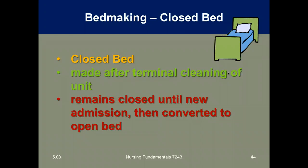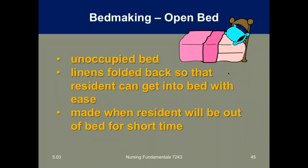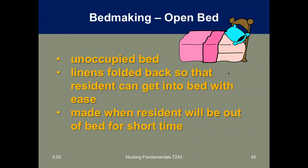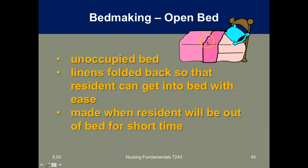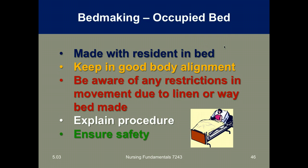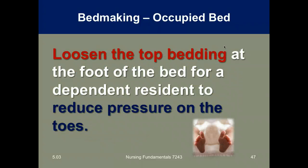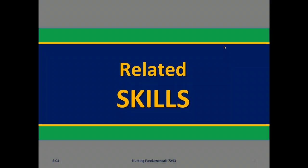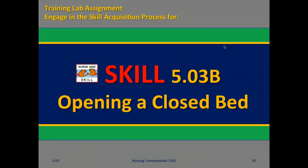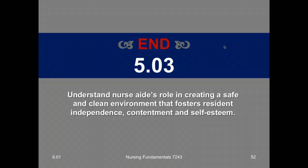A closed bed is made after terminal cleaning of the unit and remains closed until a new admission, when it's converted to an open bed. An open bed is an unoccupied bed where the linens are folded back so the resident can get in with ease — it's made when the resident will be out of bed for a short time. An occupied bed is made with the resident in the bed. You must maintain good body alignment, be aware of any restrictions or equipment, and explain the procedure to the resident to ensure their safety. Loosen the top bedding at the foot of the bed for a dependent resident to reduce pressure on the toes.